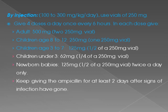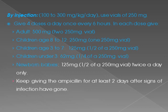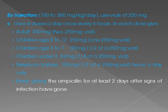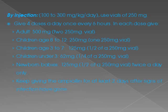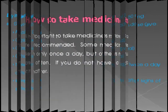Children age 3 to 7 — 125 mg (half of a 250 mg vial). Children under 3 — 62 mg (one quarter of a 250 mg vial). Newborn babies — 125 mg (half of a 250 mg vial), twice a day only. Keep giving the ampicillin for at least 2 days after signs of infection have gone.